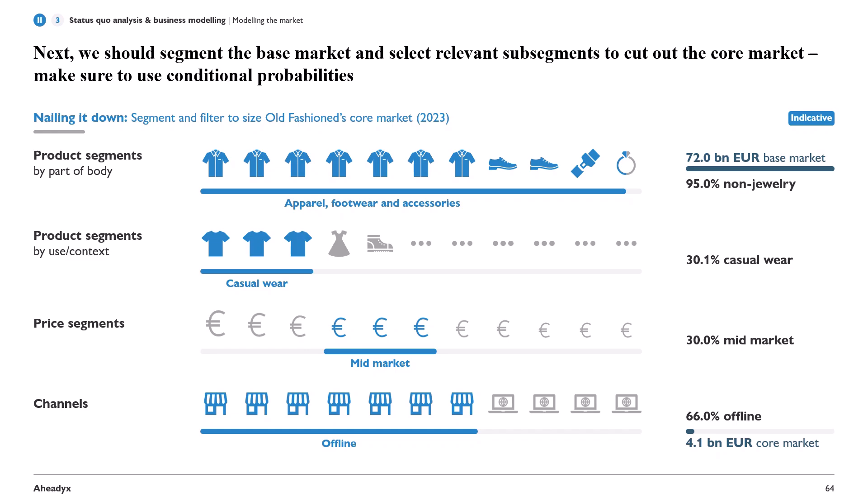By part of body: note here that we are interested in apparel, footwear, and accessories — so no jewelry — which gives us 95% of the base market.